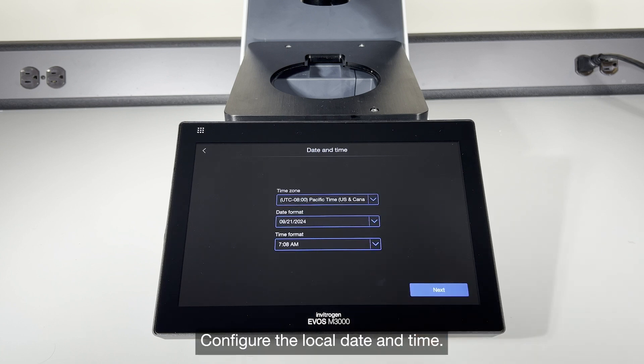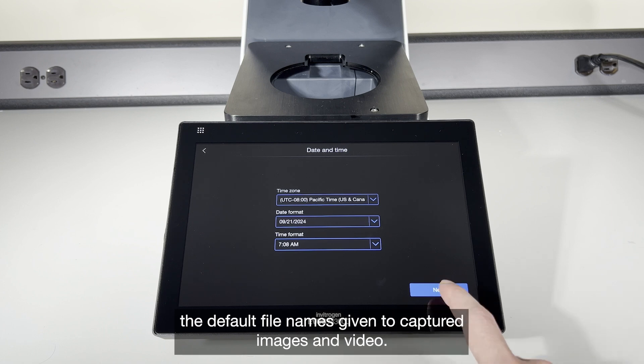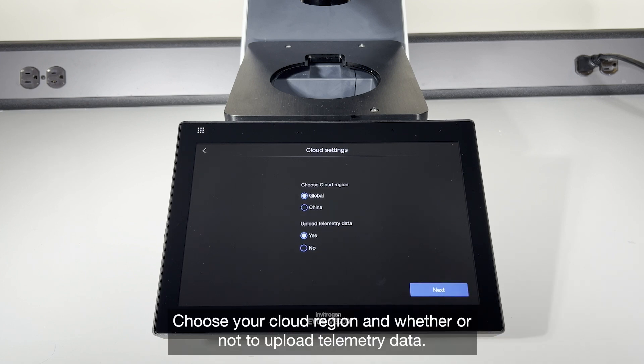Configure the local date and time. In addition to being displayed on the system, these settings will affect the default file names given to captured images and video. Choose your cloud region and whether or not to upload telemetry data.